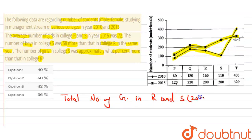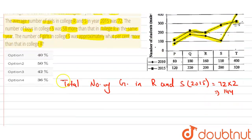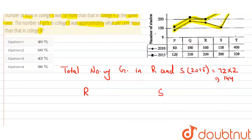The average number of girls in colleges R and S in 2015 is given as 72. So the total number of girls in R and S combined will be 72 × 2 = 144. So number of girls in R and S in 2015 is 144.